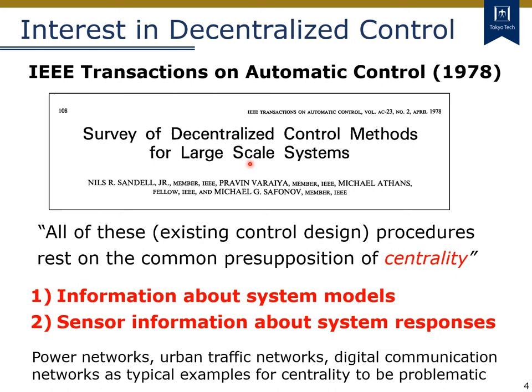In this paper, the centrality is discussed for two points. The first is concerned with the information about system models. The second is concerned with the sensor information about system responses. It is also interesting to note that in this old paper, as typical examples of large-scale systems, power networks, urban traffic networks, and digital communication networks are listed. In fact, we still have the same concerns as those from about 40 years ago.